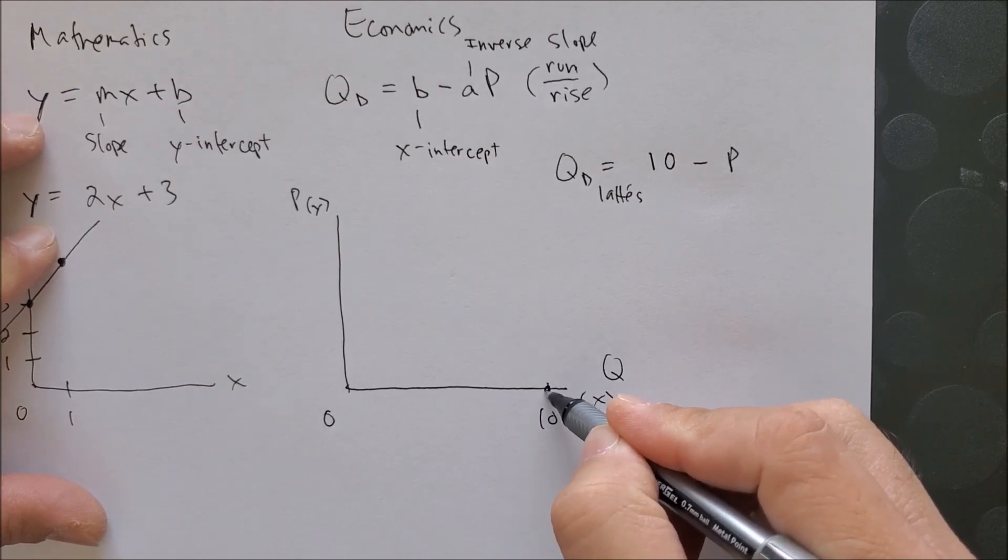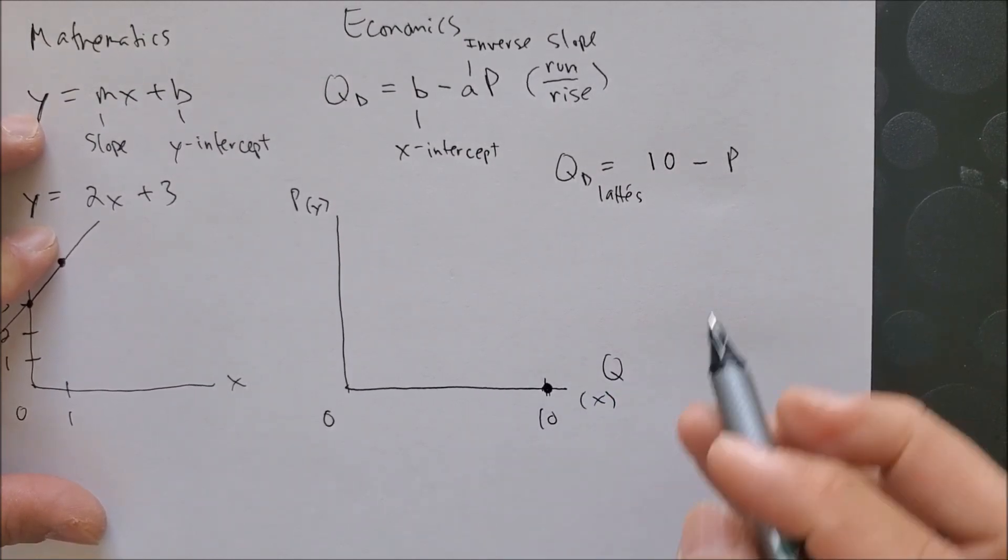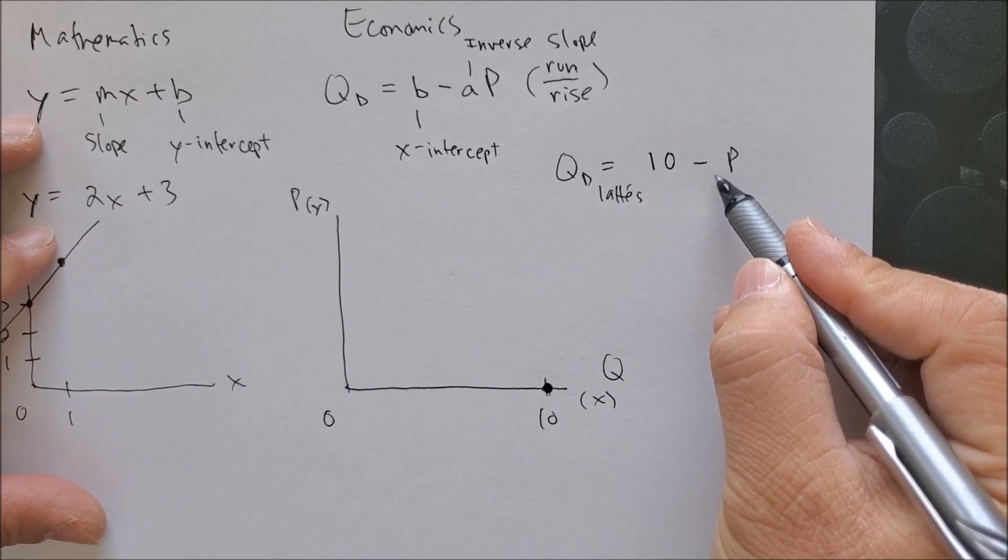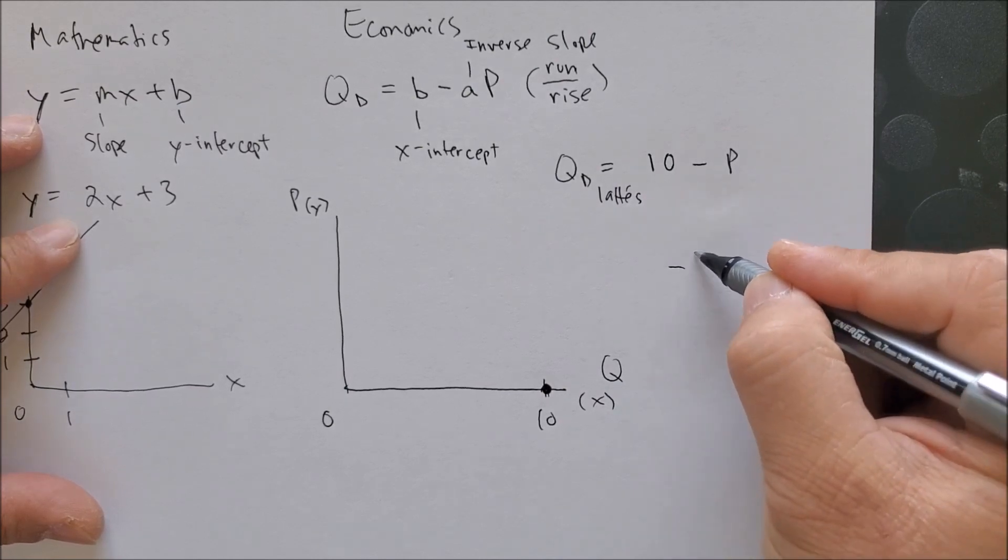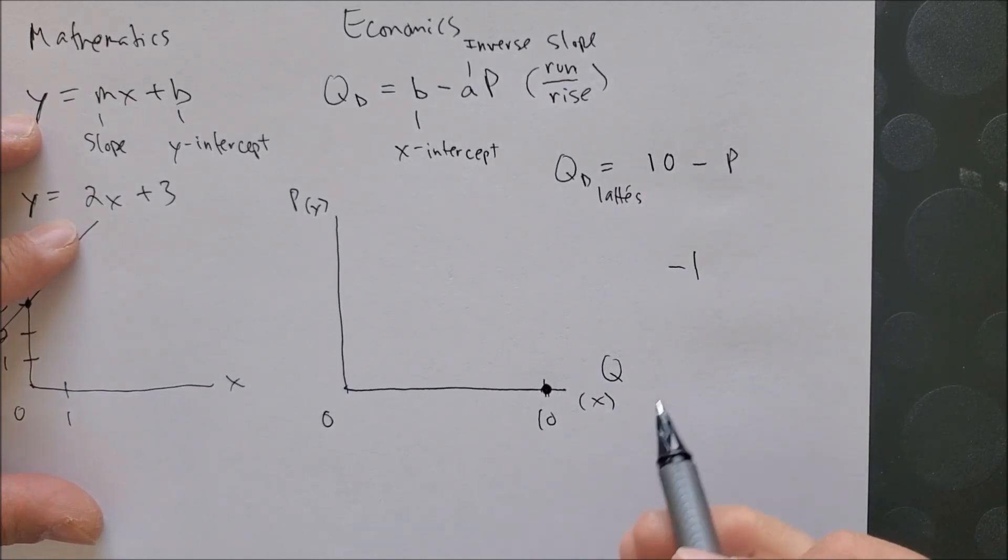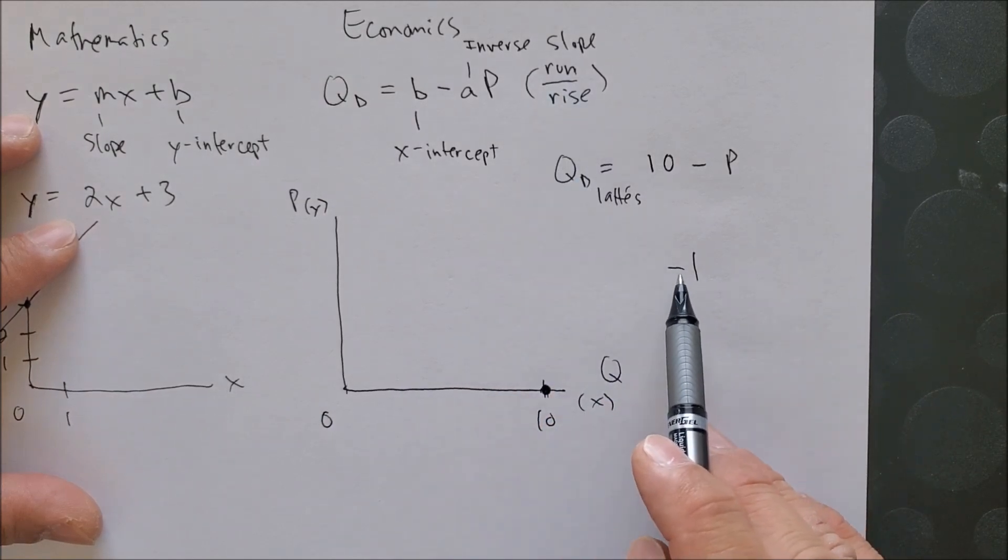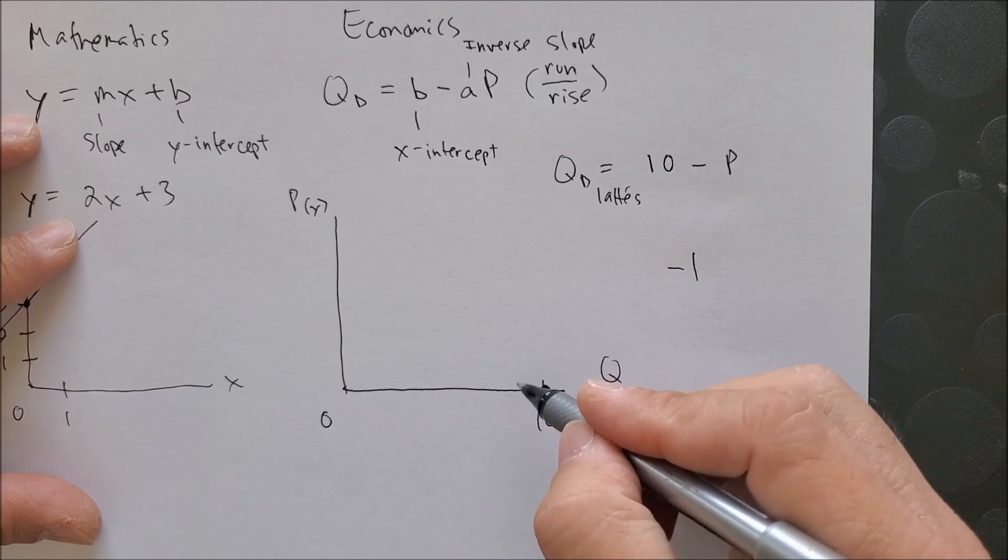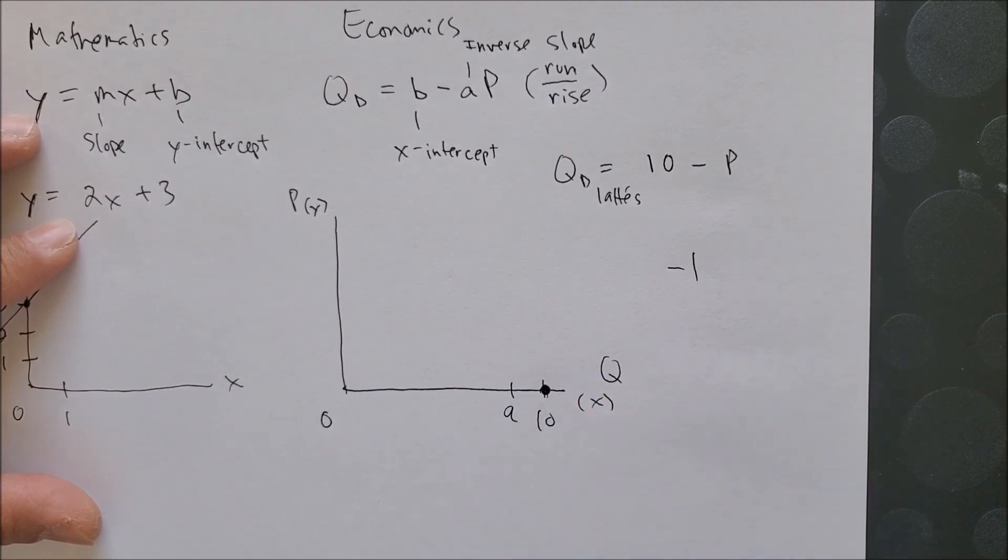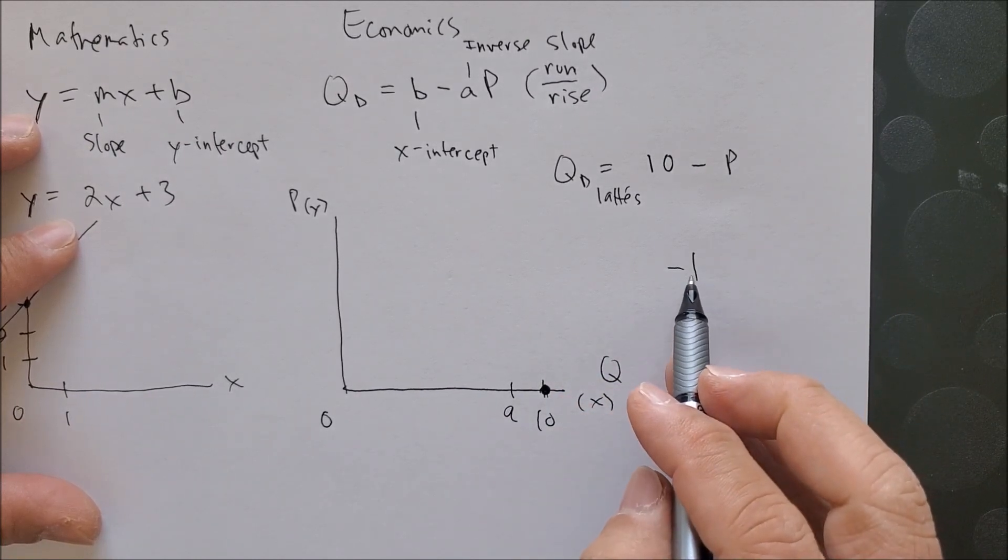here is our x-axis, that's 10. And now we see that we have an inverse slope of negative one. But now we are going to run and rise. But since this is negative, we're going to run to the left. That becomes nine. And rise one.